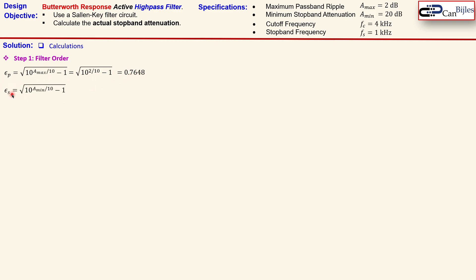Now similarly for epsilon_s which is then related to A_minimum, and that is then calculated using this 20 dB here and you get 9.9499. Now taking all this together, we use the formula for the Butterworth response high-pass filter and this is now shown here, the epsilons and also the cutoff frequency and the stopband frequency from our specifications.